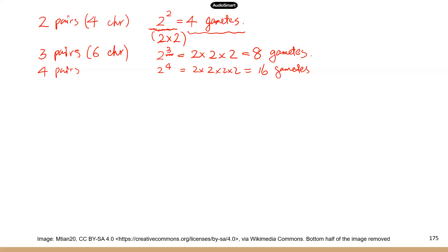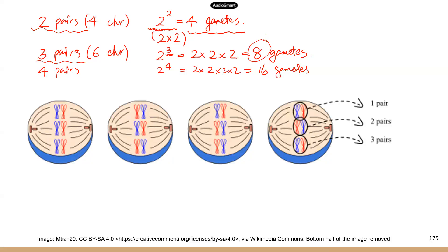Most of the time you see different combinations of chromosomes shown for just two pairs, but let's look at what happens with three pairs of chromosomes to understand how you would get eight different combinations. It's not easy to find a diagram for this — eventually I found one from Wikimedia Commons, but there are a couple of flaws with it I want to point out.